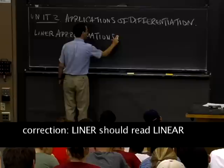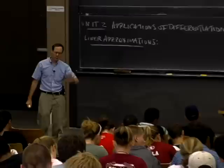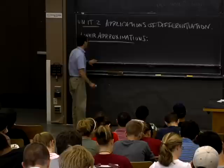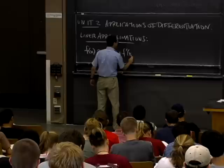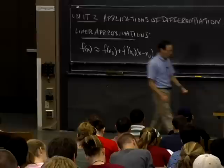This can be summarized with one formula, but it's going to take us at least half an hour to explain how this formula is used. The formula is: f is approximately equal to its value at a base point plus the derivative times (x - x₀). This is the main formula for right now.